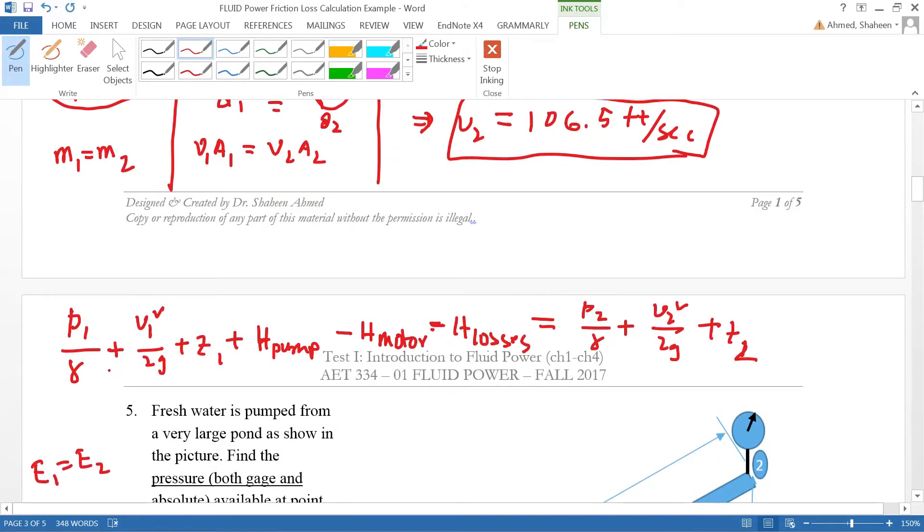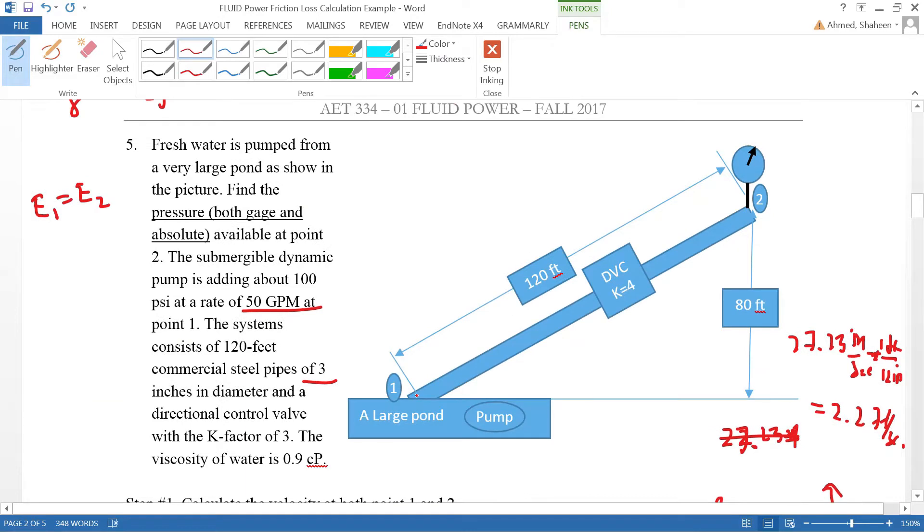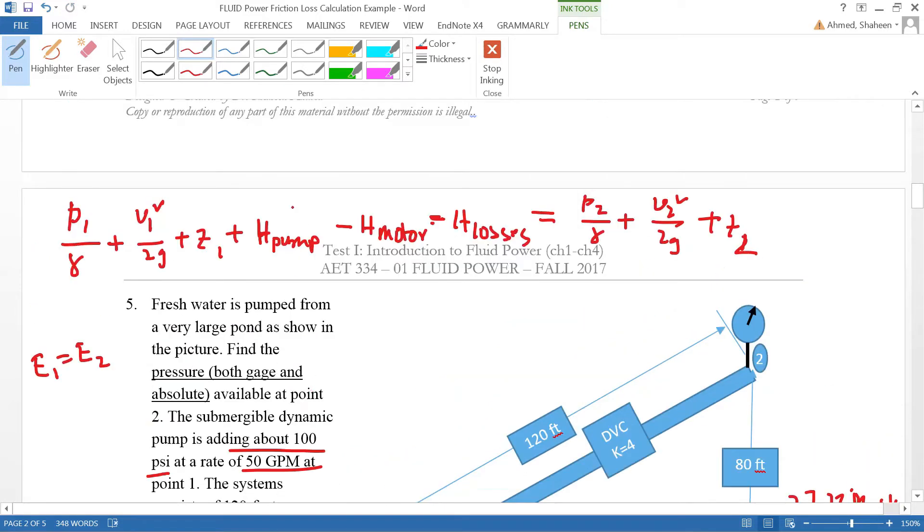So we have calculated the velocity, the head losses, and then we need to calculate this pressure head at 0.1. So either we can, in this case, it gives you 100 psi pressure head that is added by this pump. So either you could use this or this.